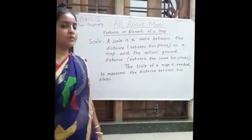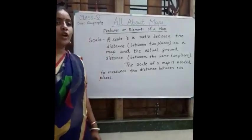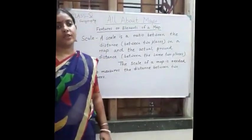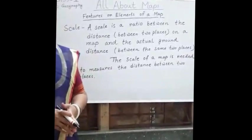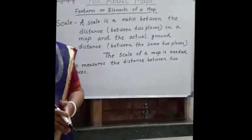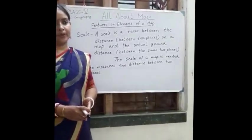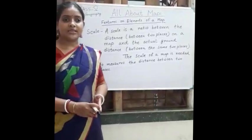Now come to the third feature, that is scale. We all know that the size of the earth is huge, and we cannot represent the original size on a piece of paper because such a huge size of paper is not available. So what we have to do? We have to reduce the size so that we can draw it on a piece of paper.